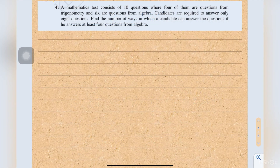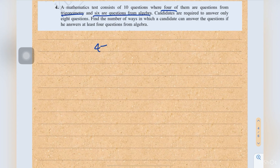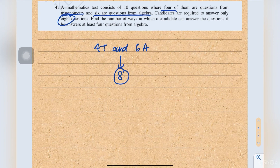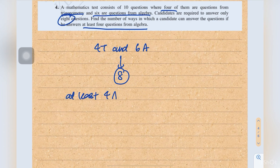Number 4: a mathematics test consists of 10 questions where four are from trigonometry and six are from algebra. Candidates are required to answer only eight questions. Find the number of ways a candidate can answer the questions if he answers at least four questions from algebra. We have four trigonometry and six algebra questions, answering eight in total, with at least four algebra.